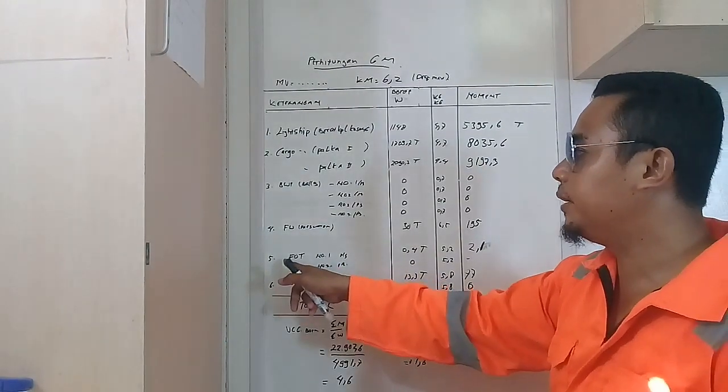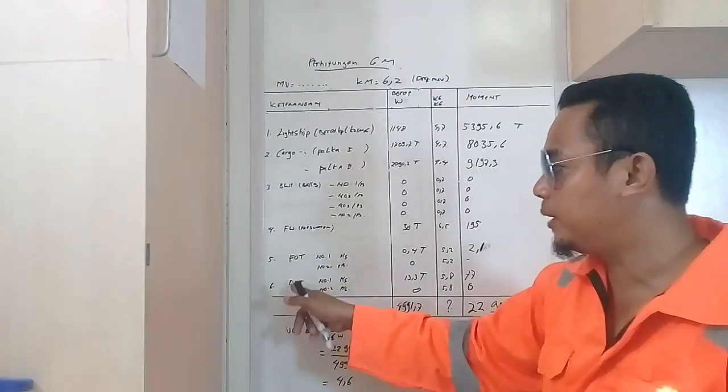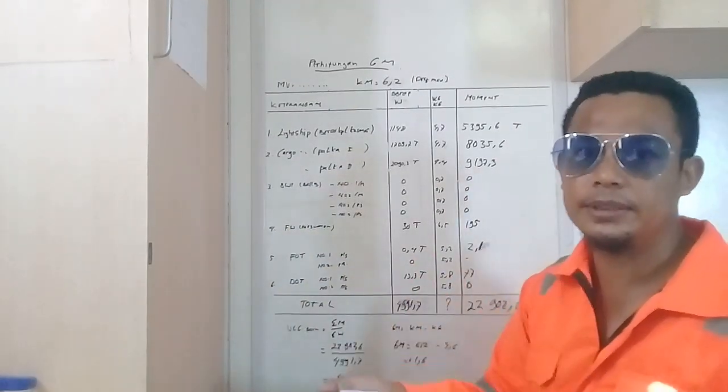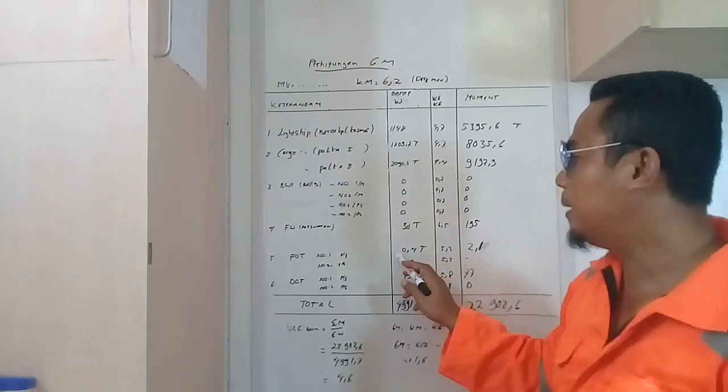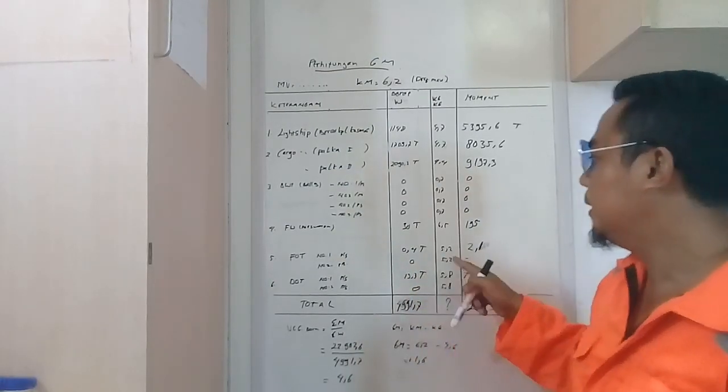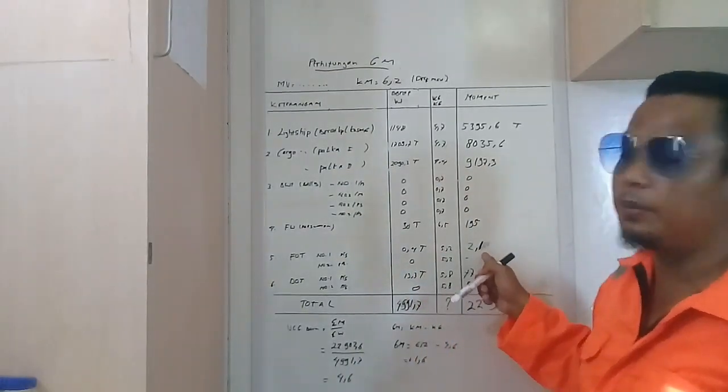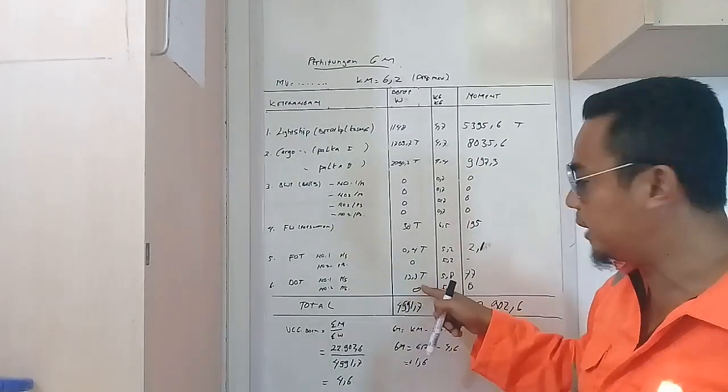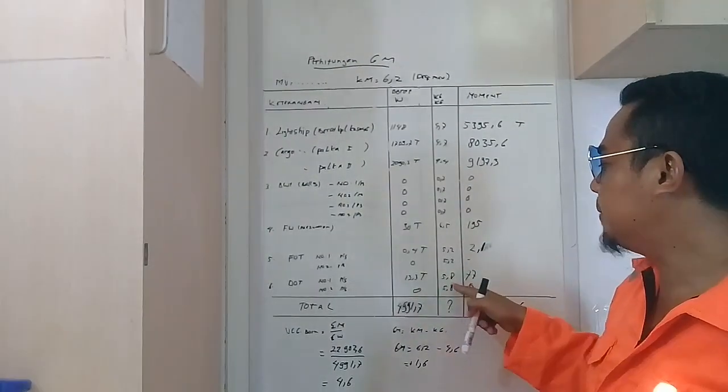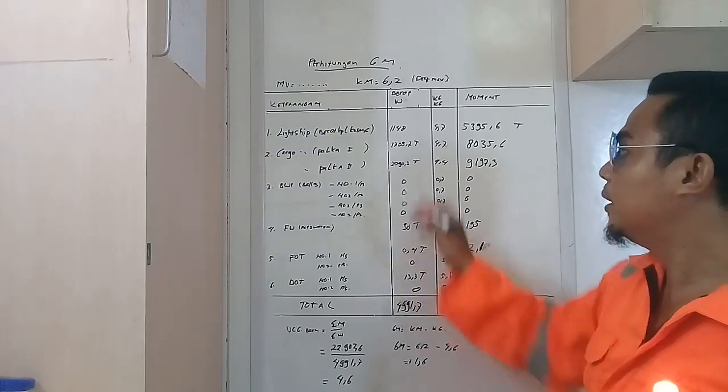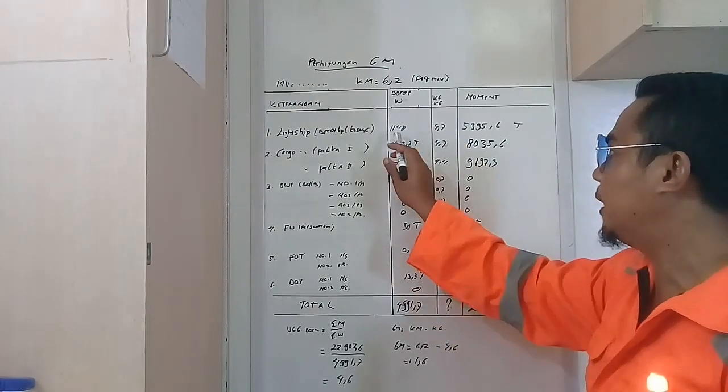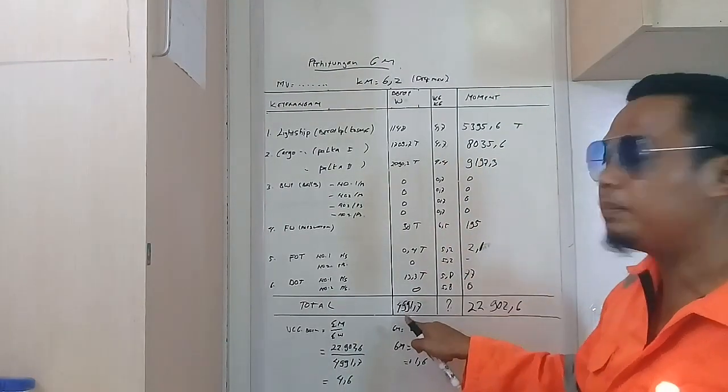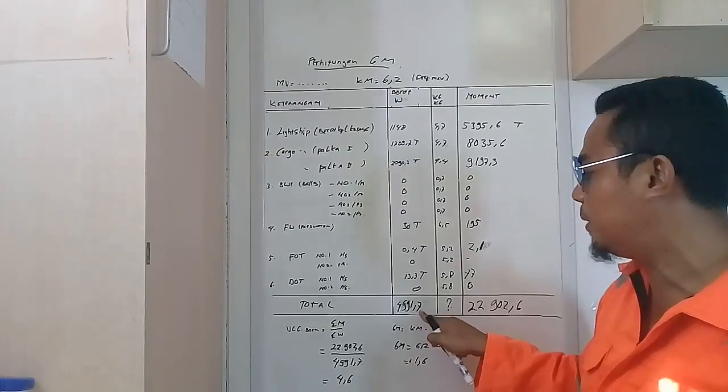Untuk mengenai oli, ini full fuel tank sama bahan bakar, kita minta informasi dari bagian mesin. Didapat 0,4 ton olinya, KG-nya 5,2, dapatnya momen 2,1. Begitu juga dengan bahan bakar 13,3 ton, KG-nya 5,8, dapat 77. Setelah selesai dikalikan semua antara berat dengan KG dan momen, maka jumlahkan semuanya dapat 4.591,7, momennya dapat 22.902,6.